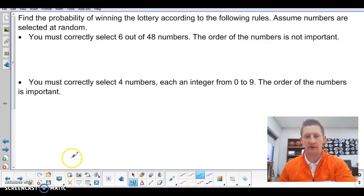The second video for defining using probability, we're going to look at probability of winning the lotto according to a couple of different circumstances. So assuming numbers are selected random, let's say you must correctly select 6 out of 48 numbers to be the winner.